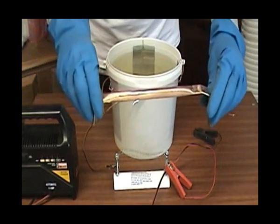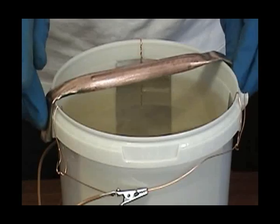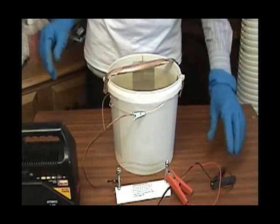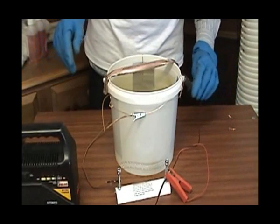For the tank bar, we're using a piece of copper pipe. Place the tank bar over the top of the tank, taking care not to touch the wire from the anodes. Now attach the negative output from the battery charger to the tank bar.